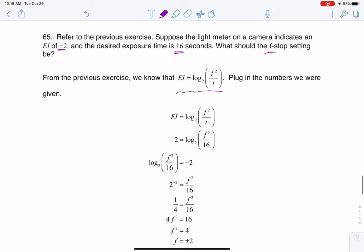So I'm going to go ahead and plug in EI being -2. I'm going to plug in the time being 16 seconds, and then they're asking me to solve for the f-stop, so I can do that. And that's where you see this equation coming from. I've plugged -2 in for EI and I've plugged in 16 for time.